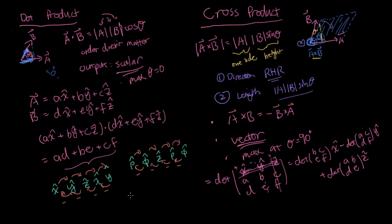Finally, for spherical coordinates — note we use the convention where theta is the angle from the Z axis, which is how electrical engineers define it. The order is rho, theta, phi. Going in the forward direction gives a positive result; going in the reverse direction requires adding a negative sign. When taking the cross product of any two basis vectors in three dimensions, the result is always that third basis vector — the only question is whether it carries a positive or negative sign, which this cyclic ordering trick tells you.